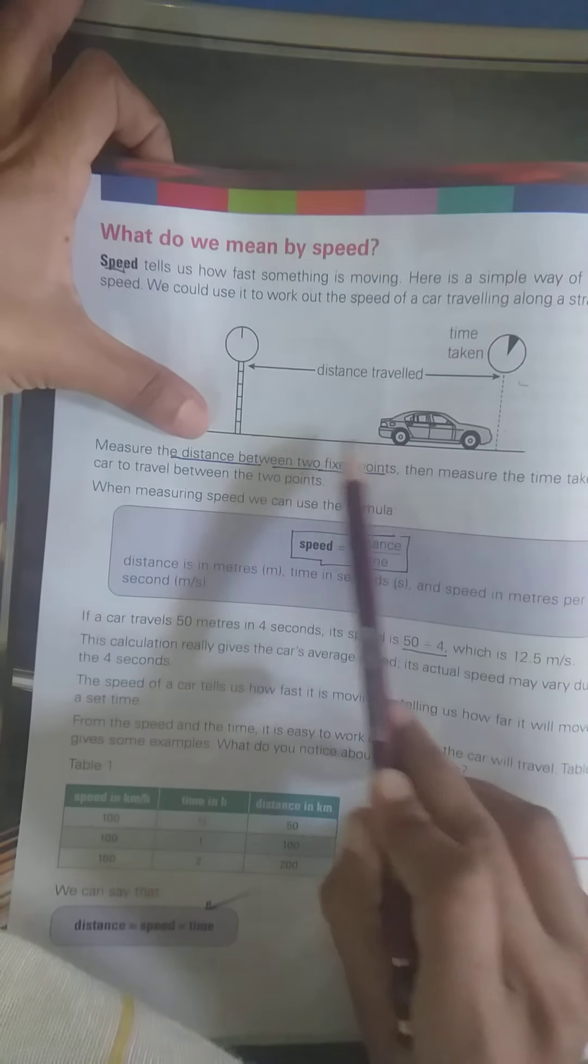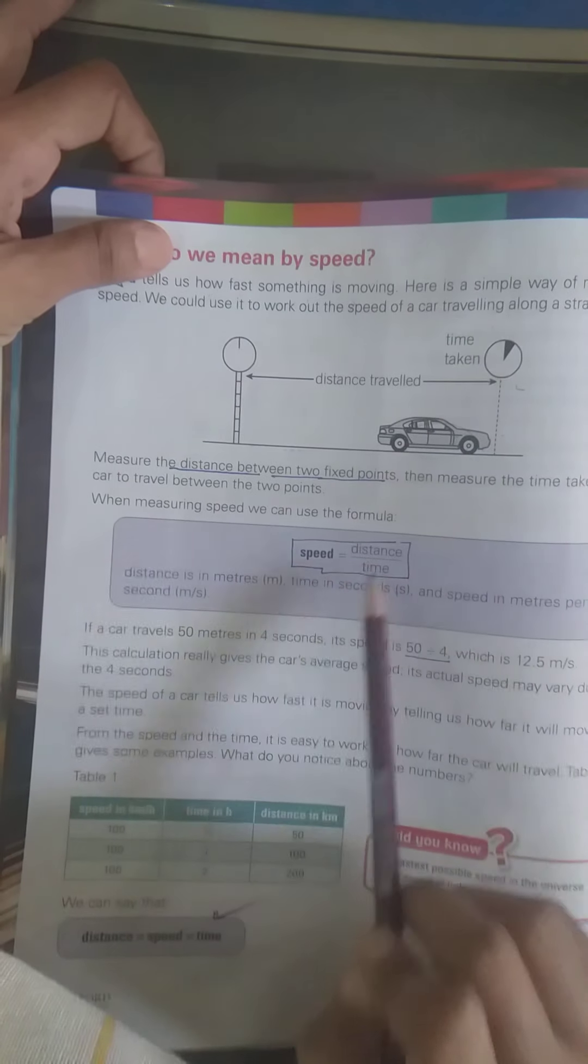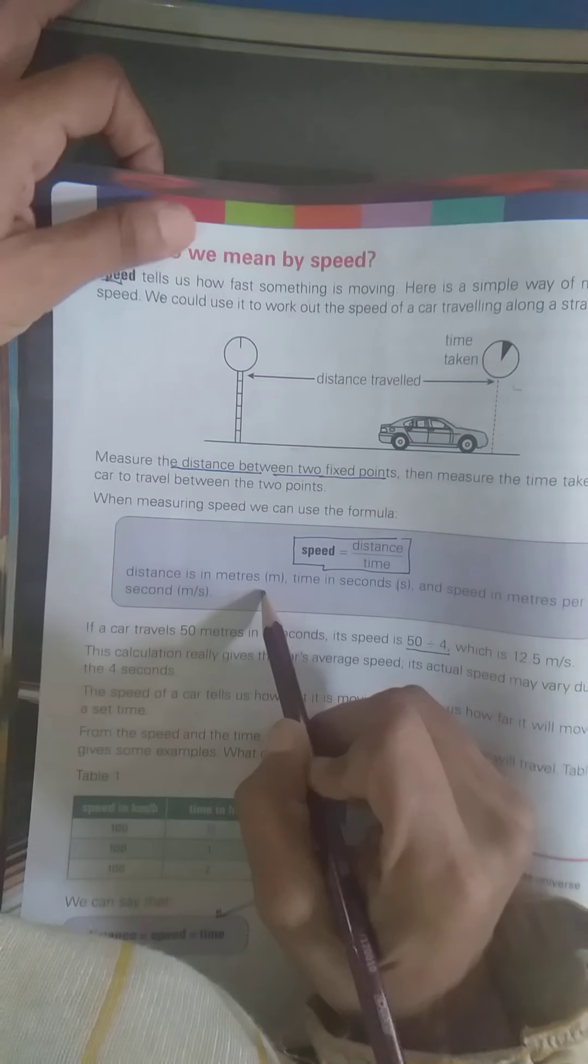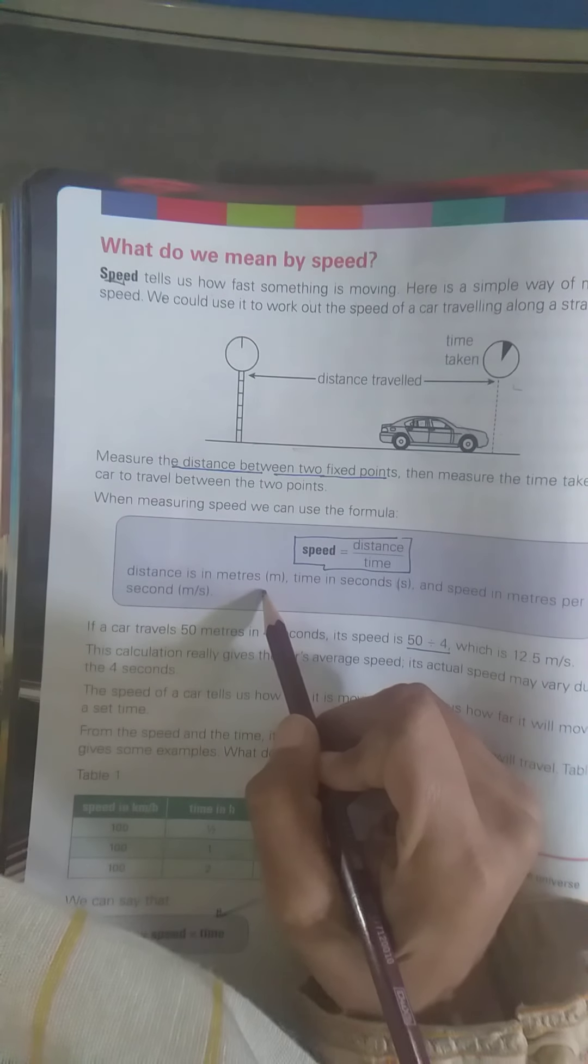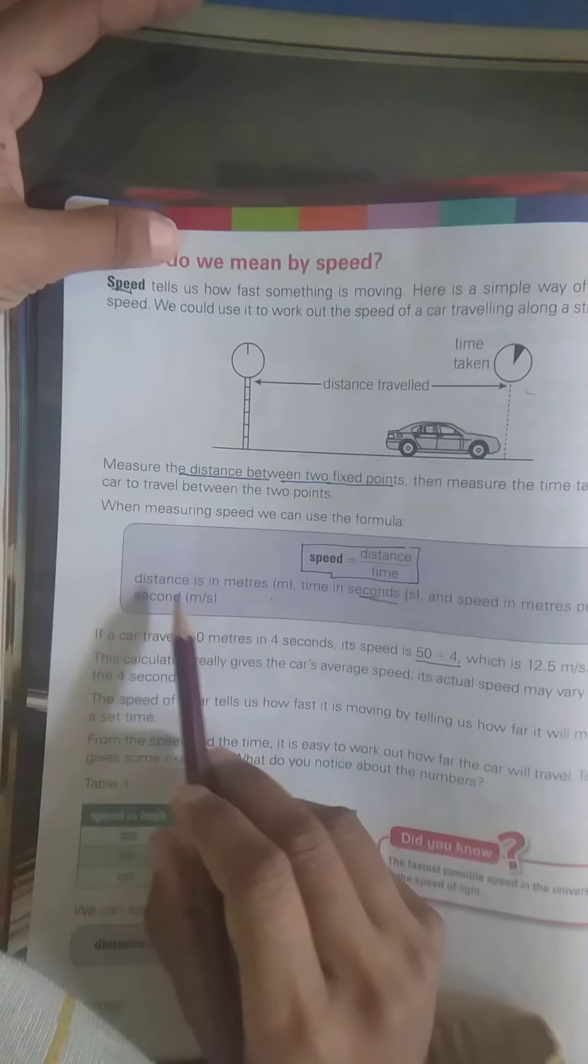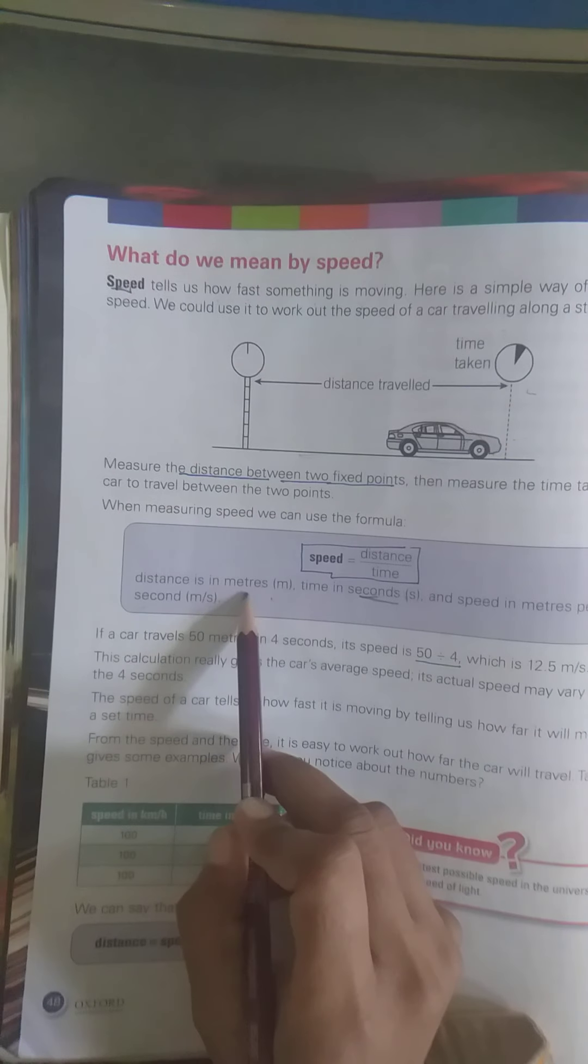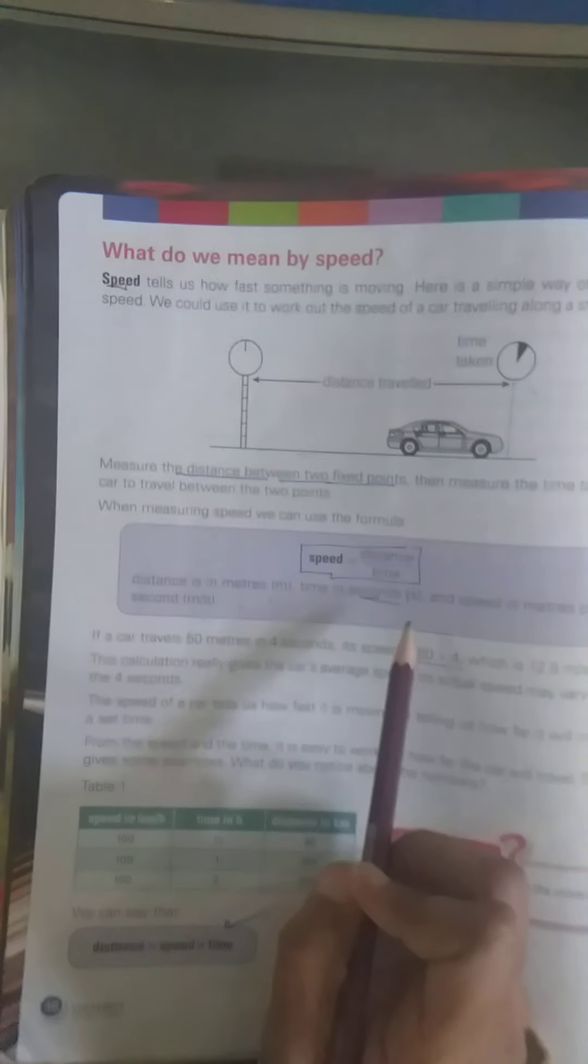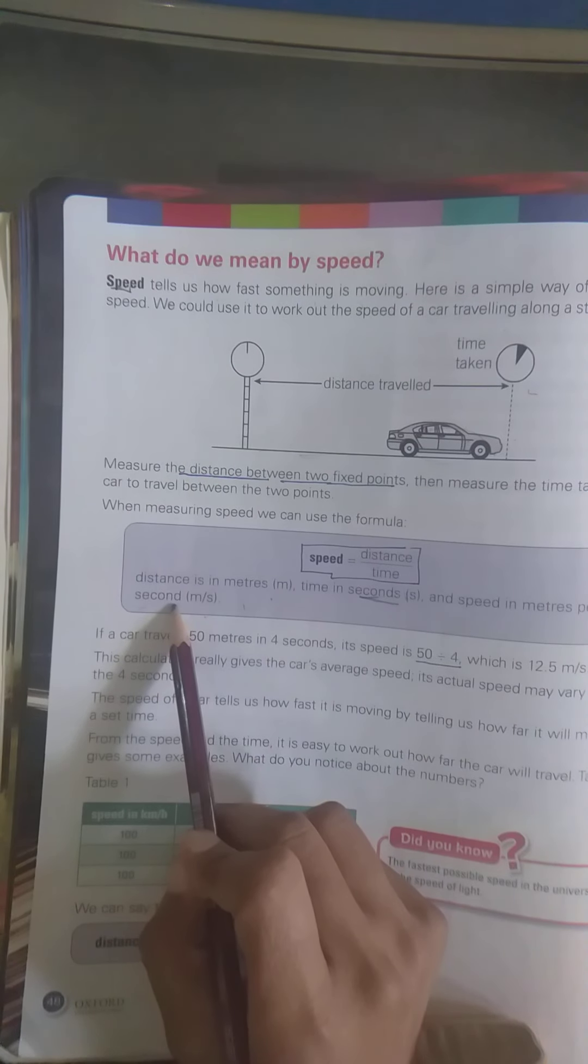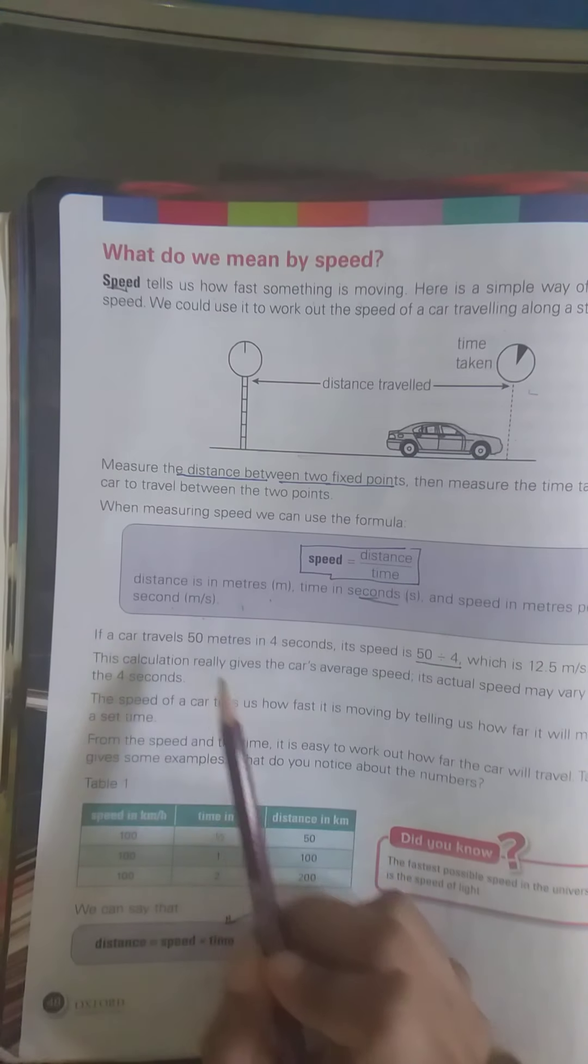Yarni ke yeh distance hai, or is distance ke liye is kar ko kitana time chahi hai. To yeh hemare paas formula hai. Distance ko em measure karthay hai meters mein, yarni ke aap batathe hai ke yeh road itne meters dure hai. Hum time ko measure karthay hai seconds me, or speed ko meter per second. Distance ka unit kya hai, meter. Time ka second. Or meter per second kis ka unit hai, speed ka.